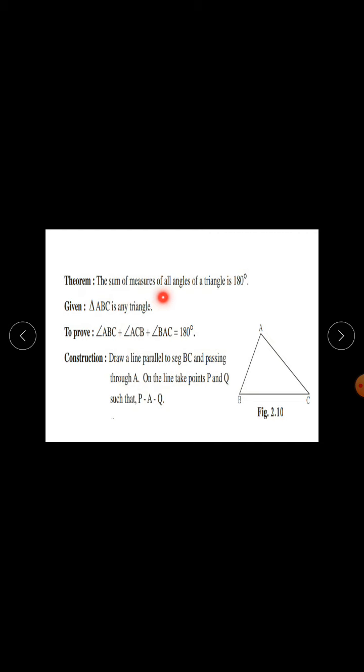Theorem: the sum of measures of all angles of a triangle is 180 degrees. Given: Triangle ABC is any triangle. To prove: angle ABC + angle ACB + angle BAC = 180 degrees.